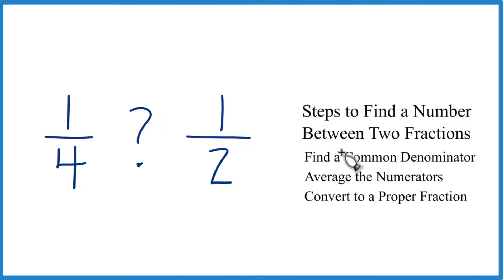So to do this, the first thing we want to do is find a common denominator. Right now we have 4 and 2. We want these to be the same.